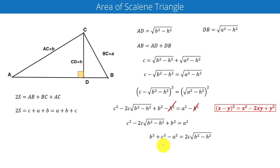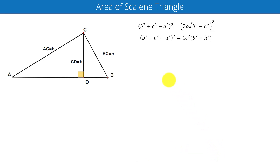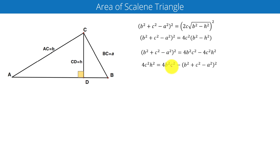We take the radical term to the right-hand side and remaining terms to the left-hand side, giving b squared plus c squared minus a squared equals 2c times the square root of b squared minus h squared. Squaring both sides, the right-hand side becomes 4c squared times (b squared minus h squared). We can further simplify this equation.